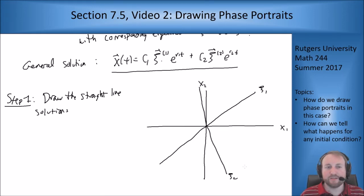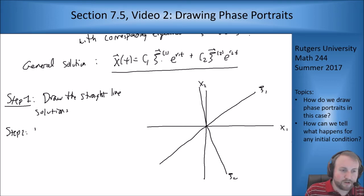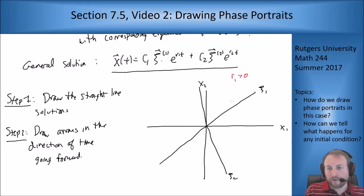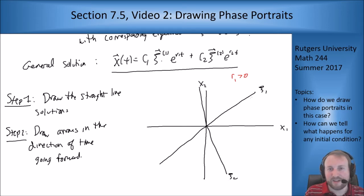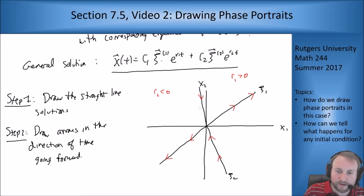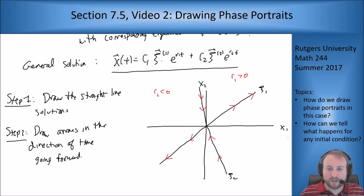For these straight line solutions we also have to know which direction they're going. So step two: draw arrows in the direction of time going forward. If r₁ is positive, then as time goes on the solution on the ξ₁ line is going to keep getting further and further away from zero, because the function of t is growing. So this solution goes away from zero. If r₂ is less than zero, then this solution is going to move in towards zero as time goes on, because e^(r₂t) shrinks toward zero and pulls it in toward the origin.